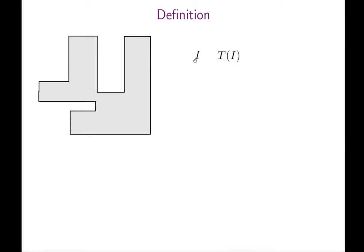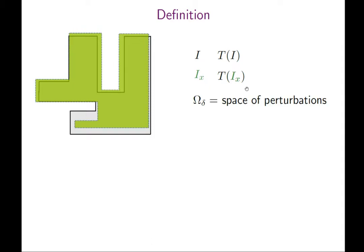Let's go to the mathematical definition now that we've got the setup right. We denote by I the instance and T(I) the running time of the instance. I_x denotes an instance perturbed by x, where x symbolizes the perturbation, and T(I_x) is the running time of the perturbed instance. We define Ω_δ as the space of all possible perturbations, and then we can define the smoothed time for a specific instance.